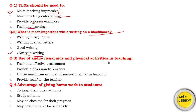Question number 3: Use of audio-visual aids and physical activities in teaching. Audio-visual aids are instructional materials, and physical activities involve movement in class. These activities are basically a skill — a skill of stimulus variation. Options include: facilitate effective assessment, provide a diversion to learners, utilize maximum number of senses to enhance learning, or provide relief to the teacher. We never choose the 'relief to the teacher' option. The C option — utilizing maximum senses — is the right answer. When using audio-visual aids, children can see and listen; with physical activity, the maximum number of senses is used.